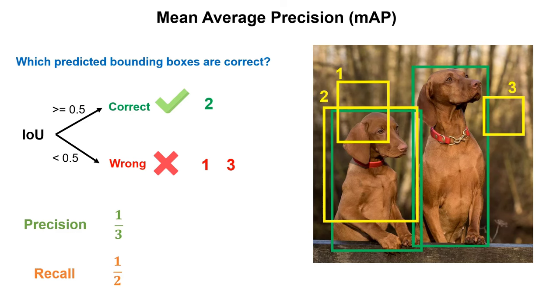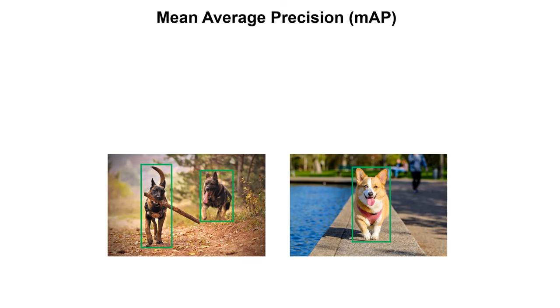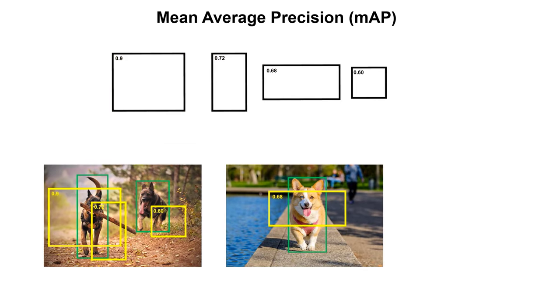Precision basically means from all our predictions, how many of them are correct? Since we predicted three bounding boxes and only one is correct, the precision would be one-third. And recall means from all the ground-truths, how many are we predicted correctly? There are two dogs and we only predicted one correctly. So recall is one-half. Now let's understand how MAP works. First let's imagine we have these four images. To calculate MAP, we first take a look at only one class, and let's choose the dogs first.